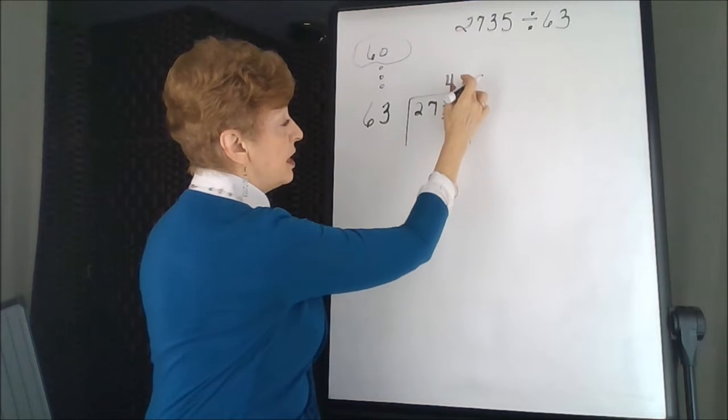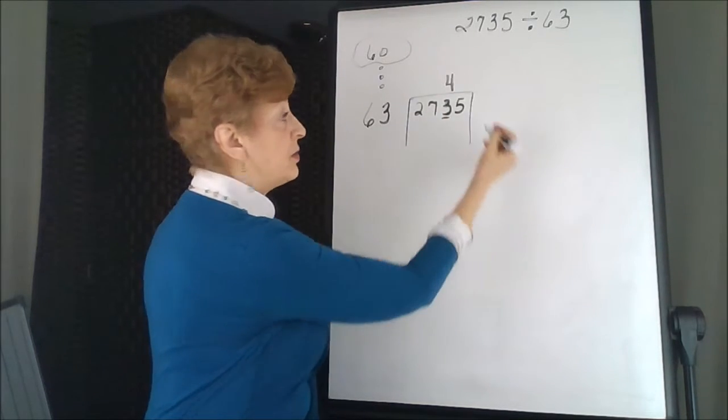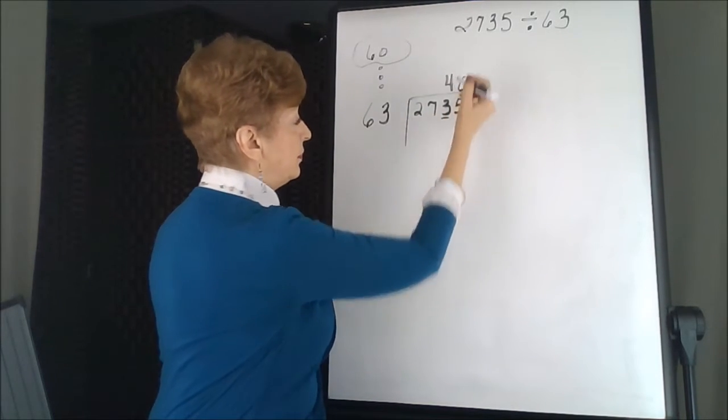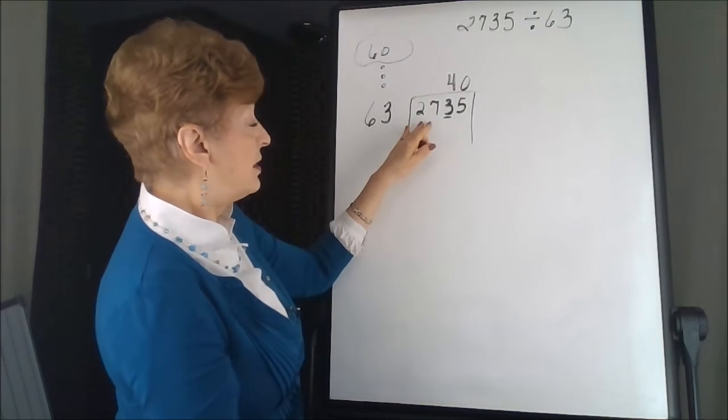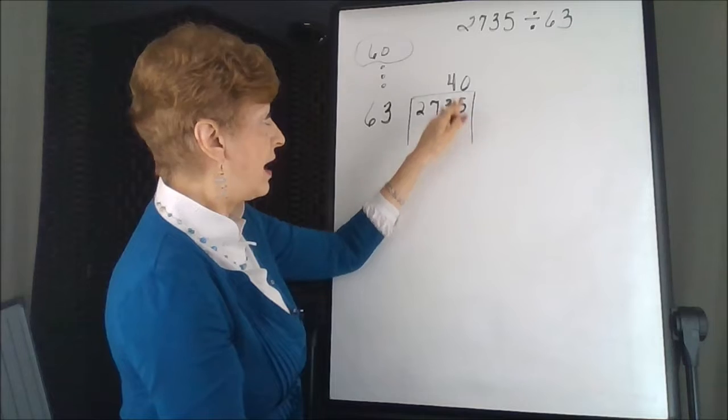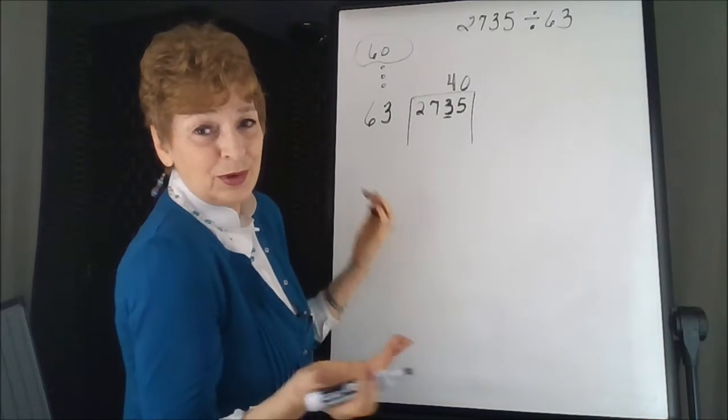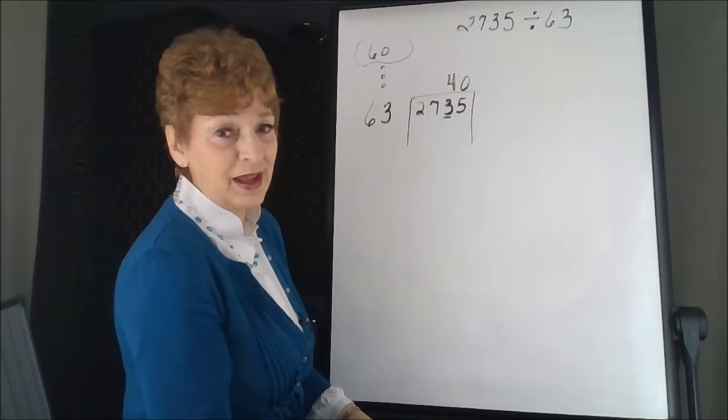And because there's an extra number here at the end, I'm going to use a placeholder. What I'm really saying is 63 divides into 2,735 40 times, but I never would have been able to think of that off the top of my head.